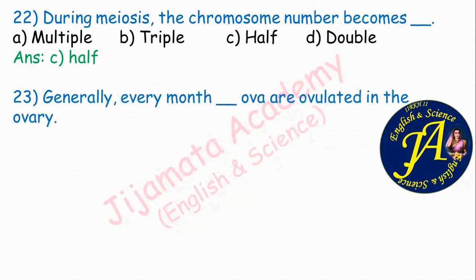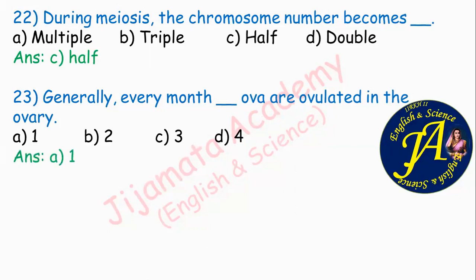Generally, every month, dash ova are ovulated in the ovary. Options are 1, 2, 3, 4. Generally every month, option A: one ovum is ovulated. One month from the left ovary, the next month from the right ovary — alternating left and right, one ovum is released each month.